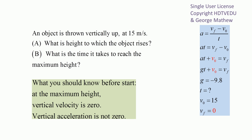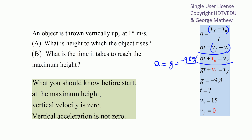Acceleration is change of velocity divided by time. Change of velocity is final minus initial. Cross multiply and we get: acceleration times time equals change of velocity. If you add V0 to both sides, we get V0 plus at equals V final. Acceleration due to gravity is equal to negative 9.8 meters per second per second.